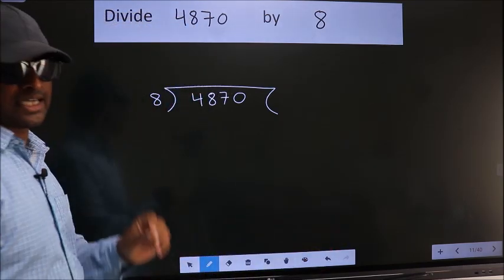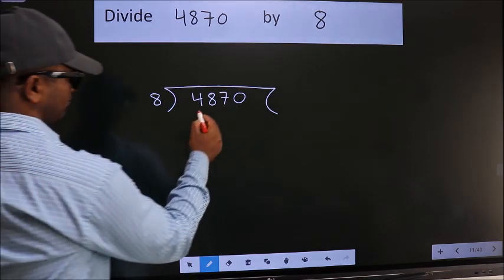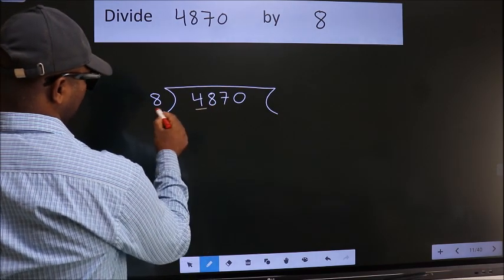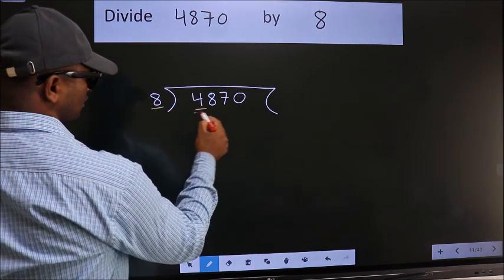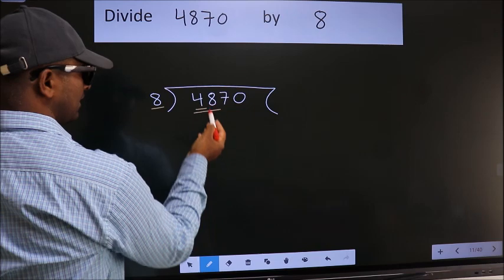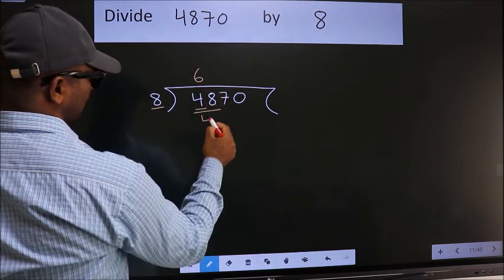This is your step one. Next, here we have 4. 4 is smaller than 8, so we should take two numbers: 48. When do we get 48 in the 8 table? 8×6=48.